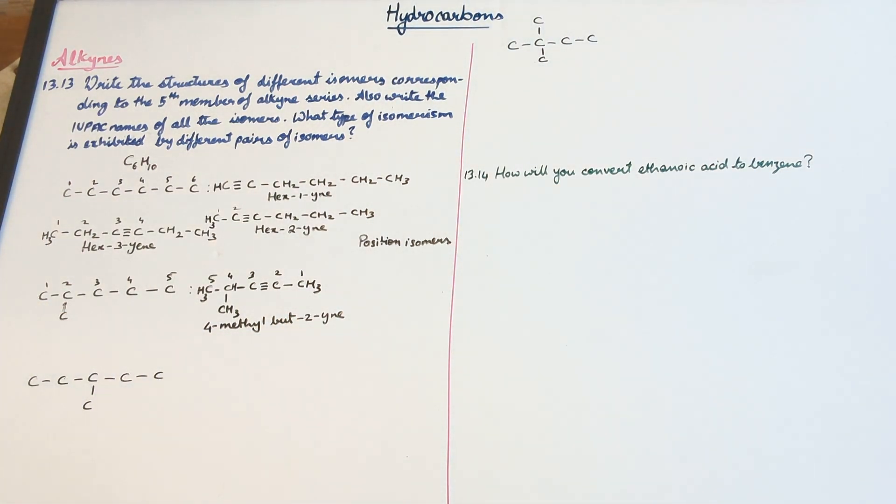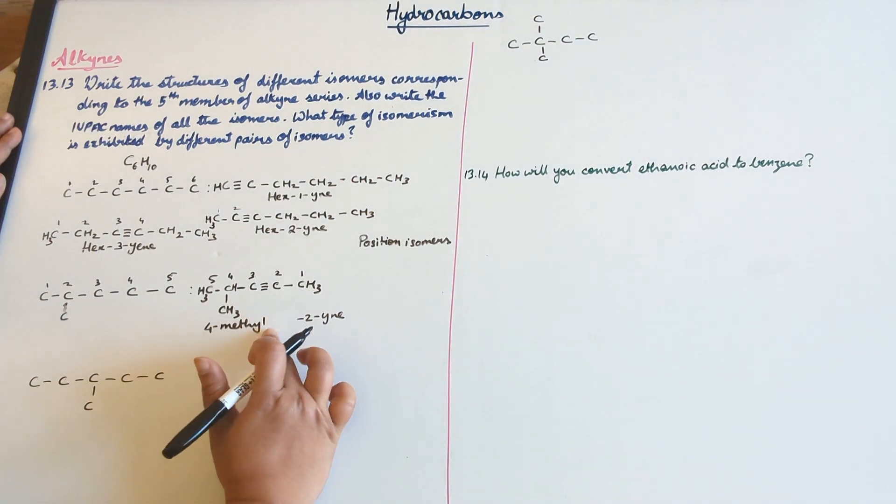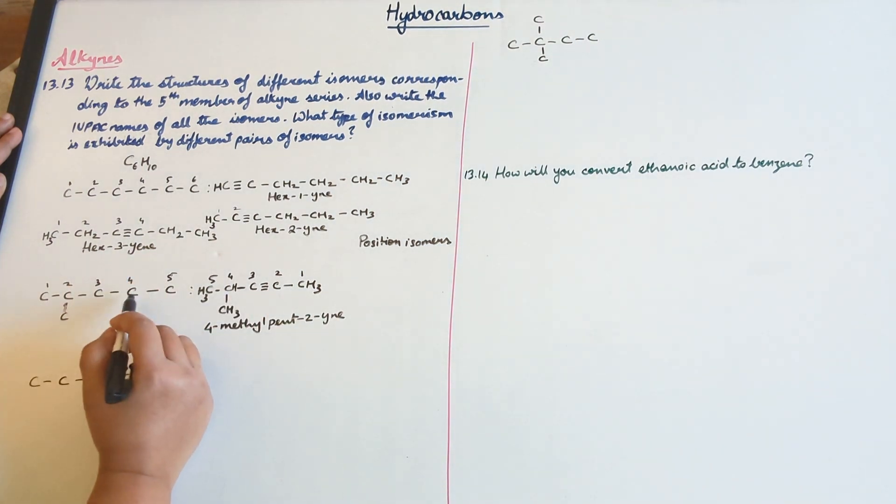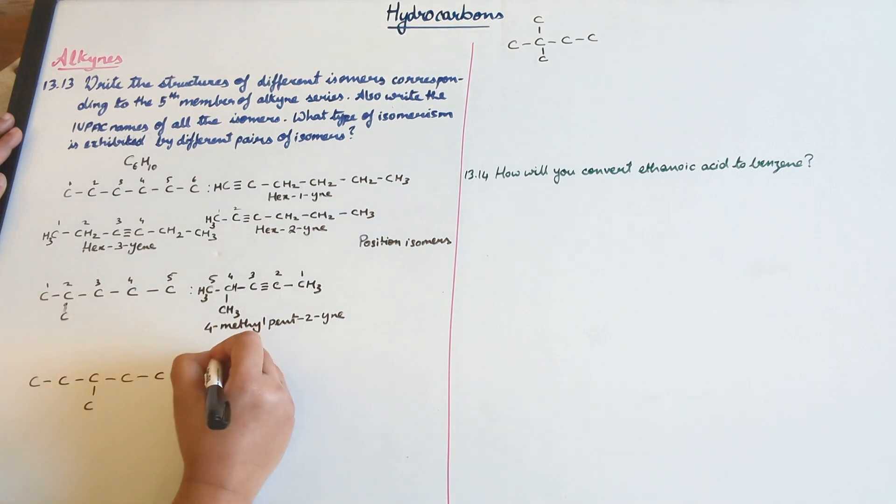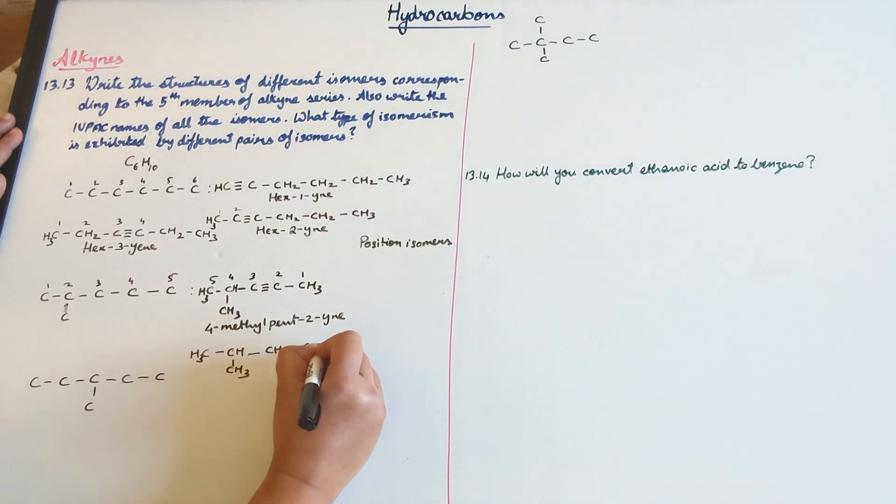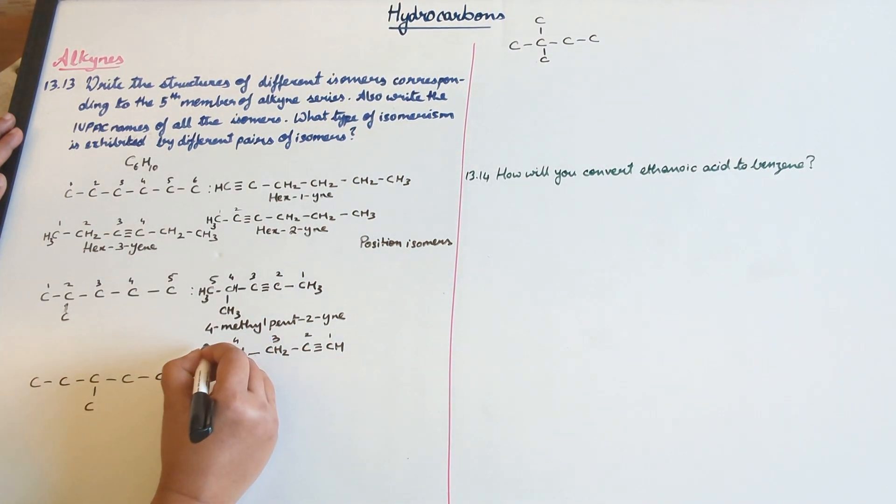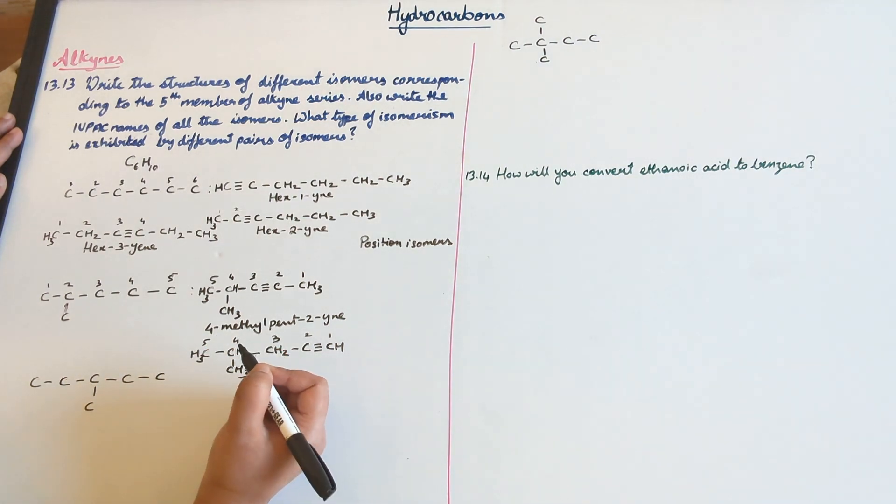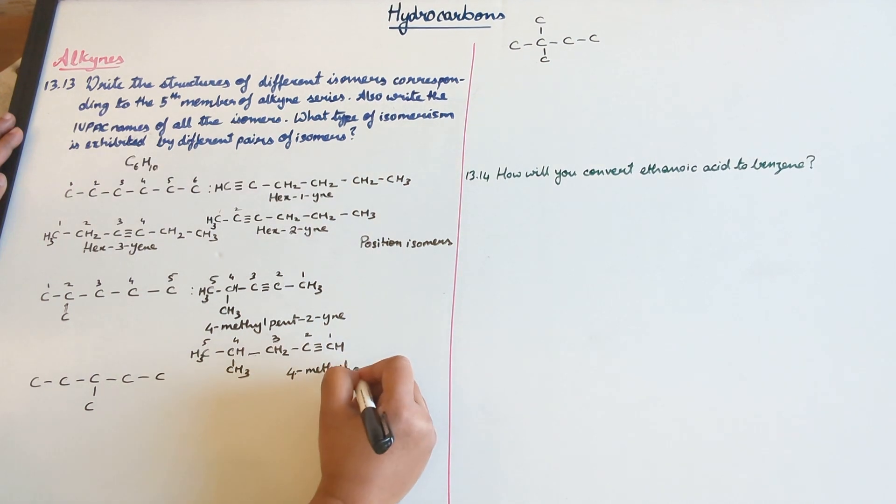Similarly, we can have a triple bond between the fourth and the fifth carbon atom as well. So CH3, CH with CH3 branch, CH2, single bond, C triple bond CH. Now this will also be numbered from the right to left. So this is the fourth carbon. So we have the methyl group attached at the fourth carbon. So 4-methyl-pent-1-yne.